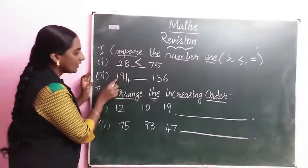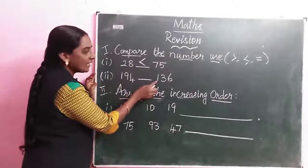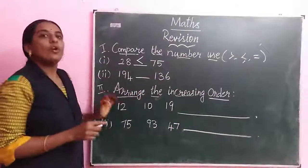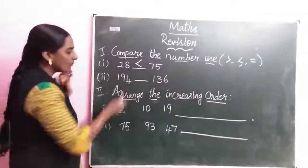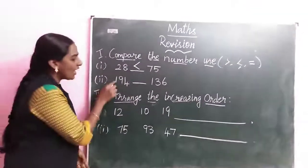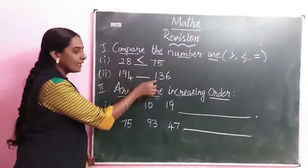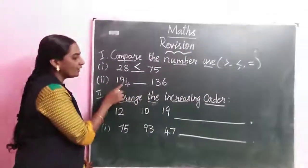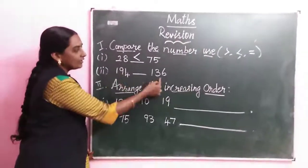Second question: 194 dash 136. Now we are using the place value. First, use the highest place value. Highest place value 100, 100. Here also 100. Next one, tenth place. Nine, 3.